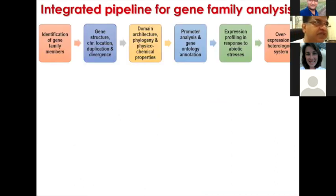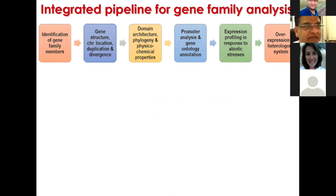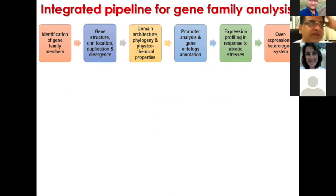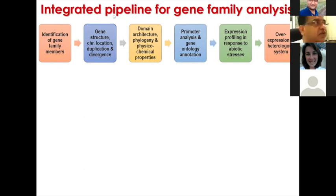Coming to the bigger picture of how to identify candidate genes — as I showed, there were 113 HSP protein hits, but we identified one based on expression studies. Similarly for other gene families, we developed an integrated pipeline. You first identify gene family members, then do gene structure, chromosome location, duplication, and divergence — all in silico.